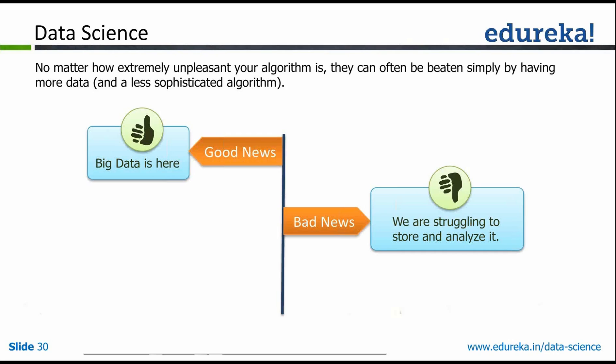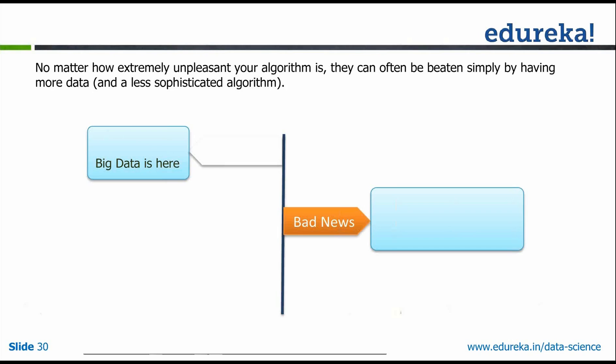Whatever Amazon did in the 90s when they built Amazon.com and the recommendation engine — that's also exactly data science, even though it wasn't called data science. Data science is not something new that came out of the blue. It's always been there; people have just given it a sexy name. Essentially, you are trying to extract meaningful and actionable information from data.